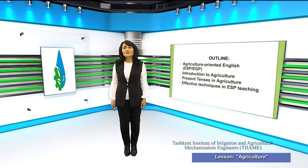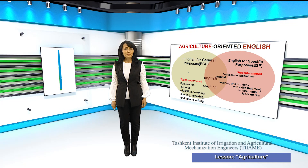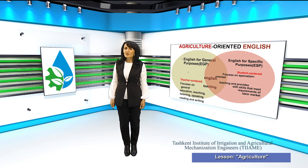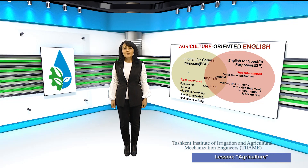EGP means English for General Purposes and ESP means English for Specific Purposes. These days a lot of ESP teachers are dealing with ESP projects where they pay attention to using CLIL — Content and Language Integrated Learning. Teachers are required to prepare content-based lessons and design ESP tasks. Today I am going to talk about agriculture-oriented English.